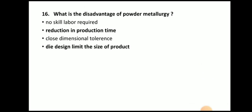Next question: What is the disadvantage of powder metallurgy? The answer is die design limits the size of the product. In powder metallurgy, we must first manufacture a die with the same shape — this is a cavity where we fill the powder and compact it. Die manufacturing is a very costly process, so we cannot manufacture large components because a large die is very costly. That is the limitation of powder metallurgy.